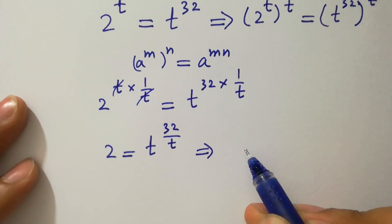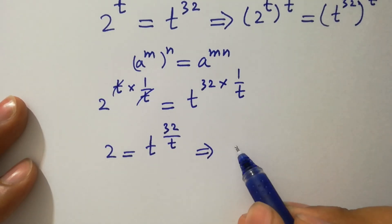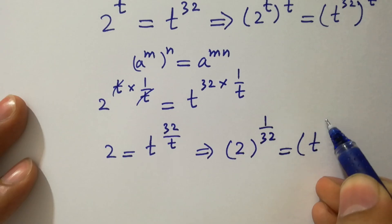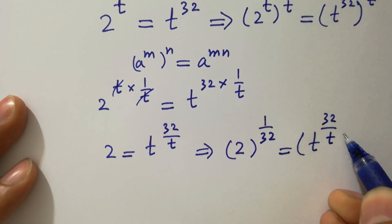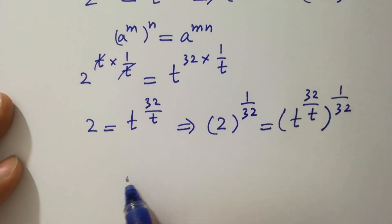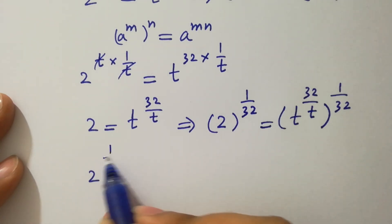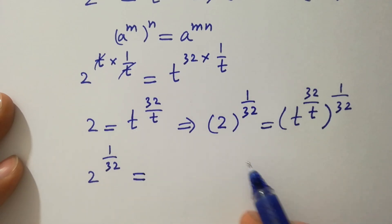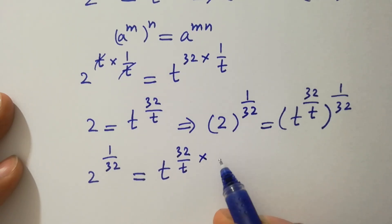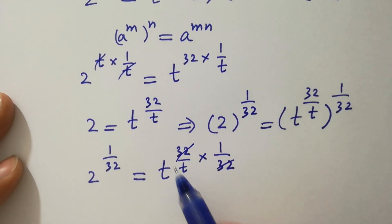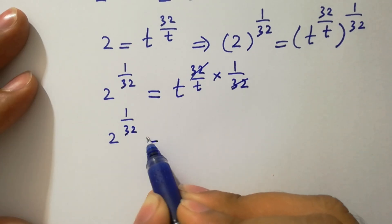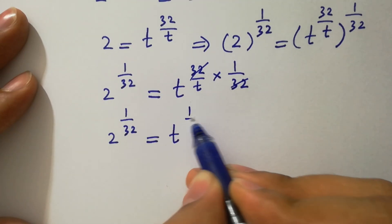Now take power 1 over 32 on both sides: 2 to the power 1 over 32 equals t to the power 32 over t, to the whole power 1 over 32. We have 2 to the power 1 over 32 equal to t to the power 32 over t multiplied by 1 over 32. 32 and 32 cancel, giving 2 to the power 1 over 32 equal to t to the power 1 over t.